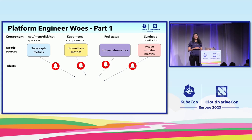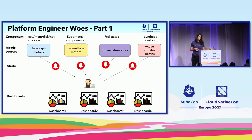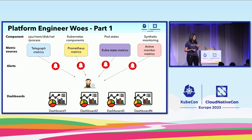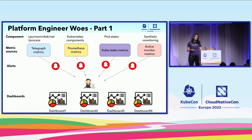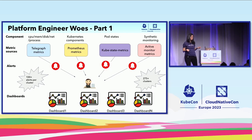All of these generate alerts. When they do, the platform engineer or SRE on call gets an overdose of alerts — frantically looking at runbooks, dashboards, trying to mitigate and remediate. Note that at scale, there are 275-plus clusters, each generating about 100-plus alerts. You do the math — our platform engineer is getting overwhelmed.